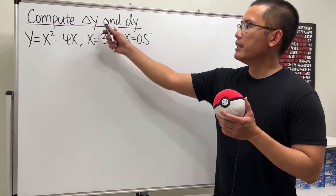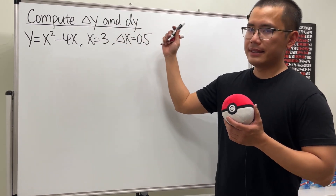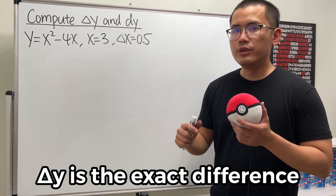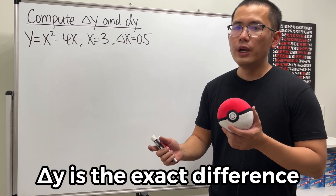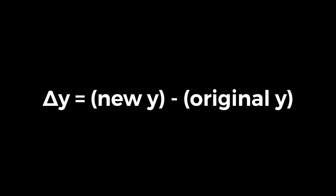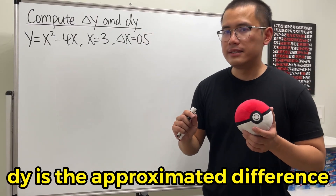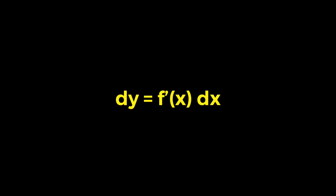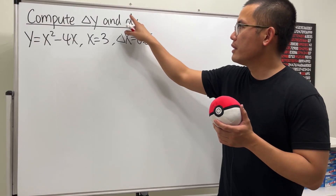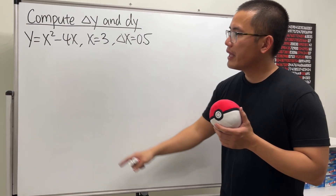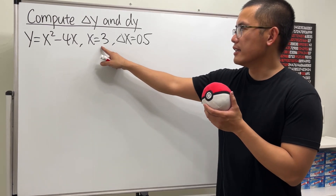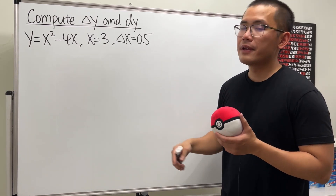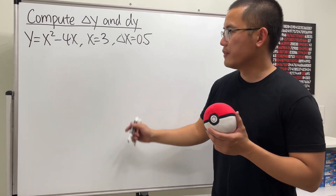Let's see how we can compute Δy and dy. Δy is the exact difference between the new y value and the original y value, and dy is the approximate difference using the derivative. This is called the differential. Here our y equals x² - 4x, x is 3, and Δx is 0.5. Let me give you a picture first.